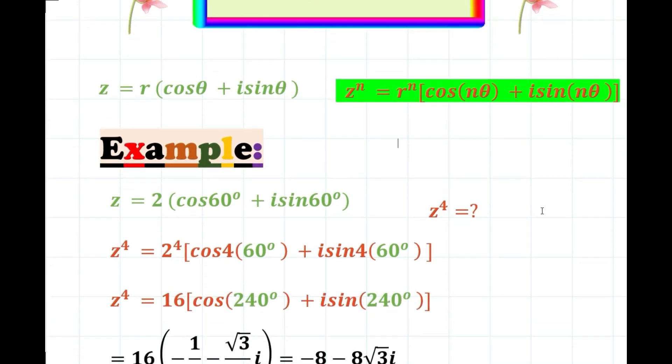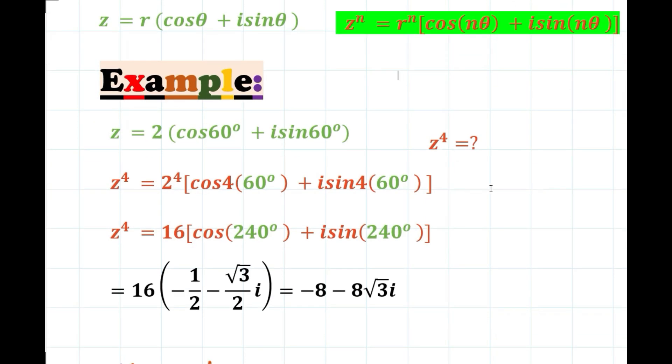First example: z equals 2 times cosine 60 degrees plus i sine 60 degrees, where r equals 2 and theta equals 60 degrees. I will substitute. z to the fourth equals 2 to the fourth times cosine 4 times 60 plus i sine 4 times 60. I will get 16 cosine 240 plus i sine 240 degrees. I can stop here or I can complete to get rectangular form, as you like.